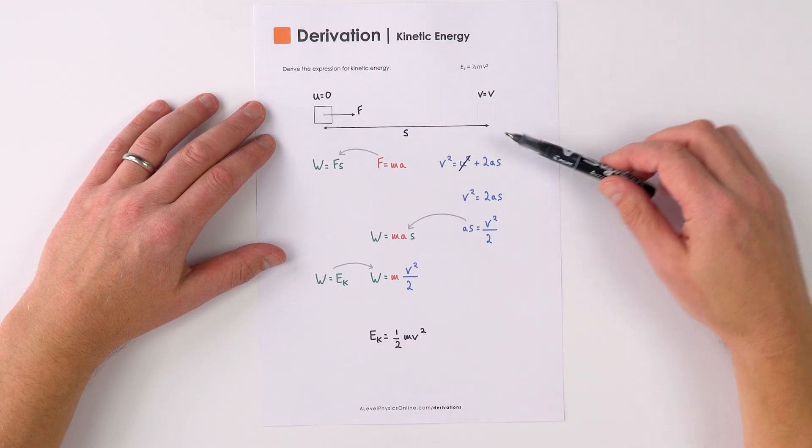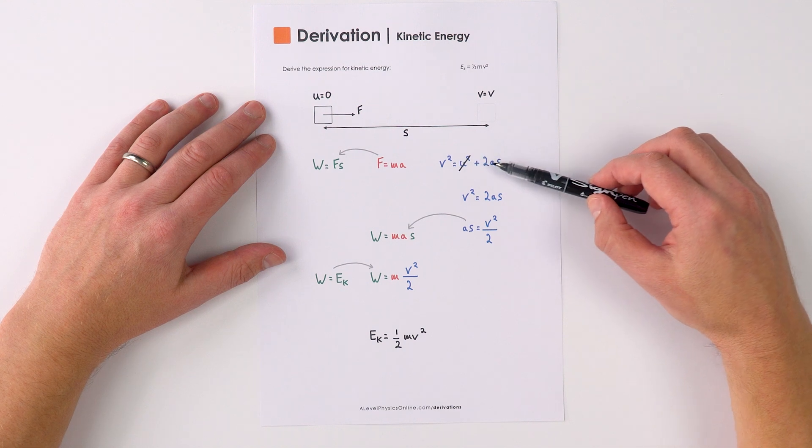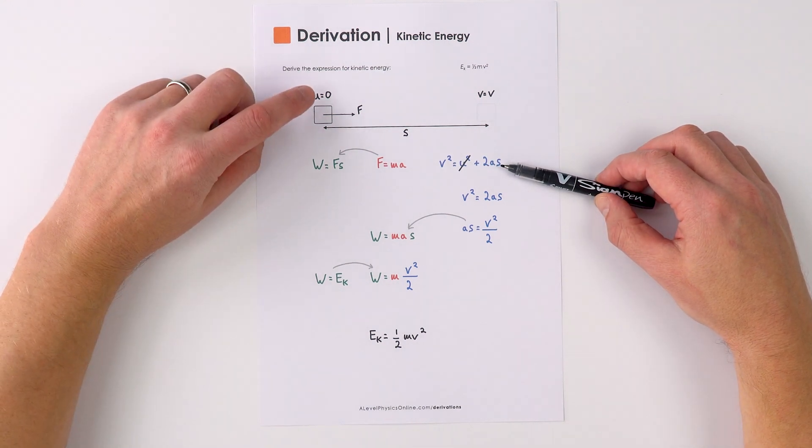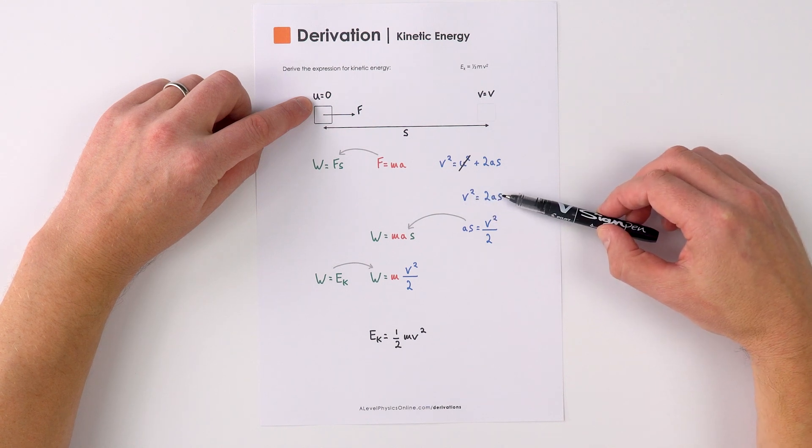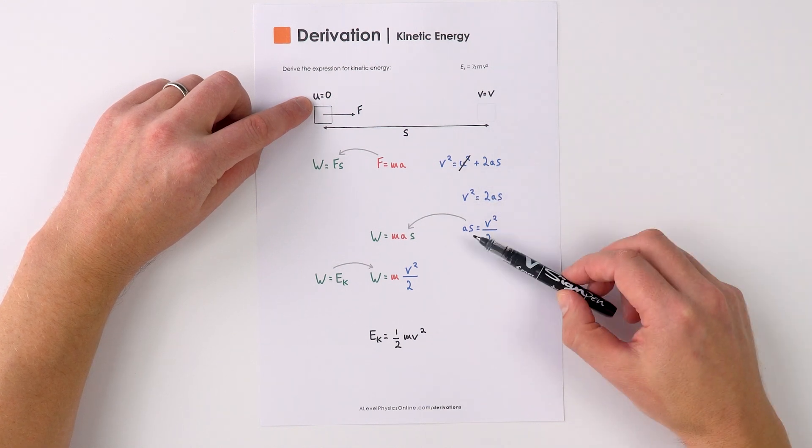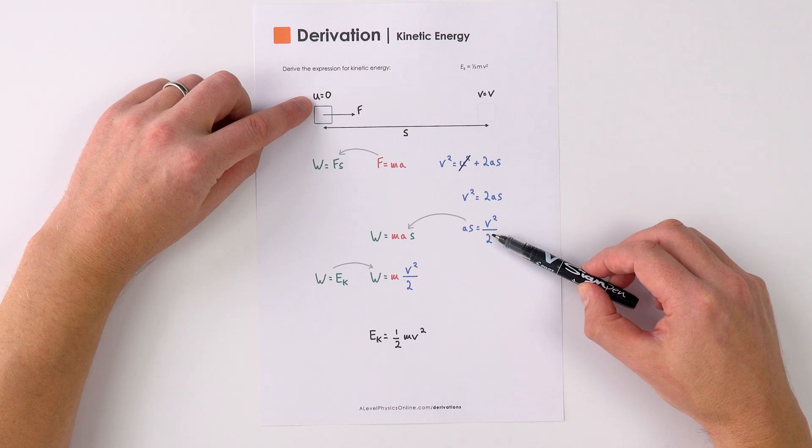Now here we've also got this Suvat equation that says V squared equals U squared plus 2As. Here the initial velocity is zero, so we can say that V squared equals 2As, or we can rearrange this to say that As is equal to V squared over 2.